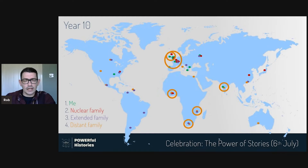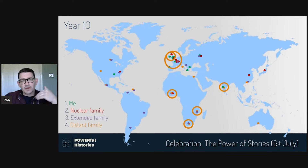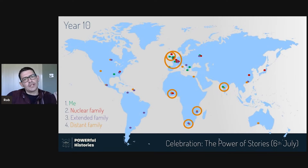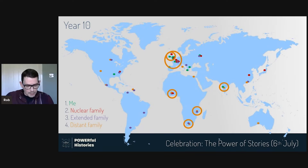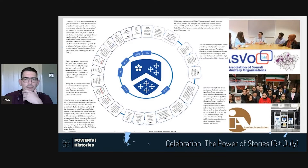Here's an example from a school in London. We want to promote critical interrogation of these global experiences. I highlighted that most of the students' family stories and experiences came from former British Empire colonies. Encouraging students to think critically about what that might tell them about their own unconscious biases is actually a really good starting point for further debate and discussion.